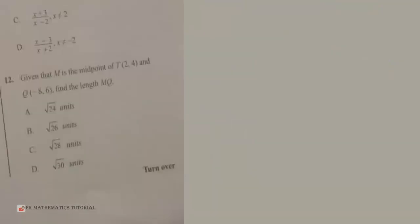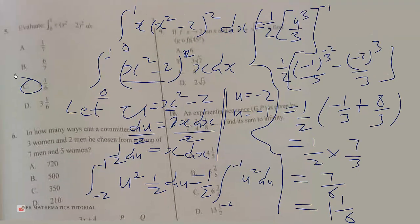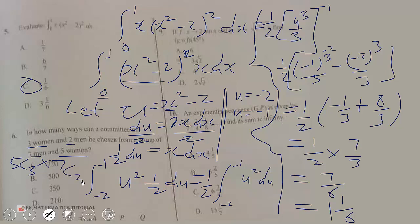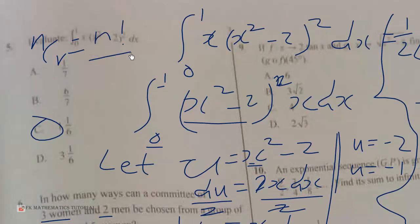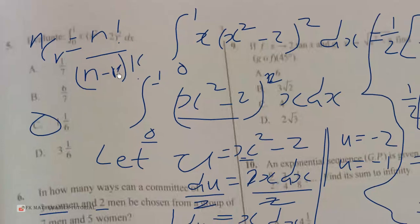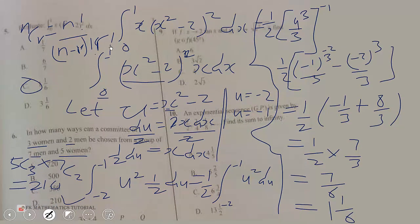Question 6: in how many ways can a committee of three women and two men be chosen from a group of five women and seven men? We compute C(5,3) times C(7,2): that is the number of ways to choose 3 women from 5, times the number of ways to choose 2 men from 7. Evaluating gives 10 times 21 equals 210. The correct answer is option D.